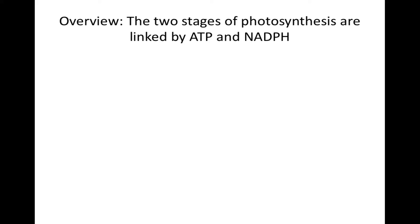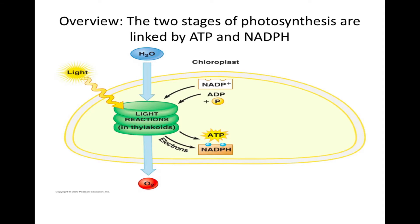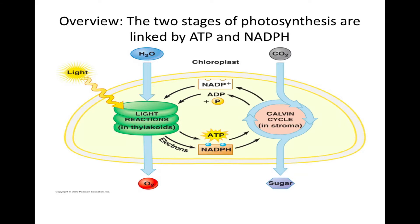Overview: the two stages of photosynthesis are linked by ATP and NADPH. Stage 1 is called the light reactions because sunlight energy is needed. Sunlight is first absorbed by the thylakoids and used to break apart water to make oxygen gas, while the hydrogen atoms from water are transported by NADPH to the chloroplast's stroma. Both NADPH and ATP are used in the Calvin cycle, stage 2 of photosynthesis. The Calvin cycle uses ATP, NADPH, and carbon dioxide to make sugar.